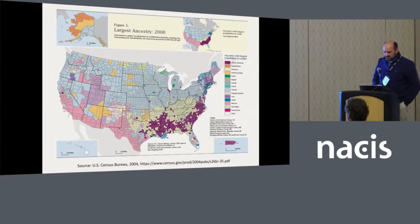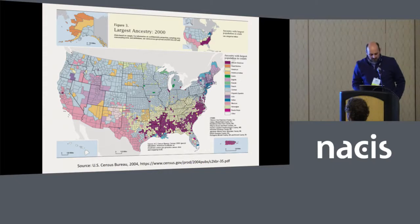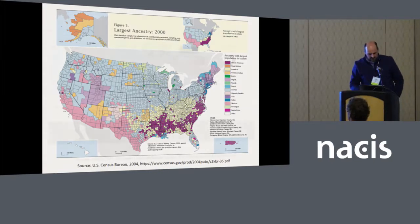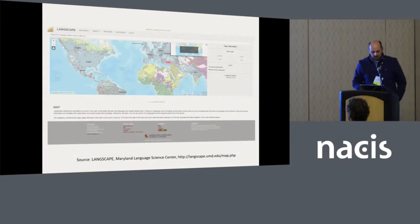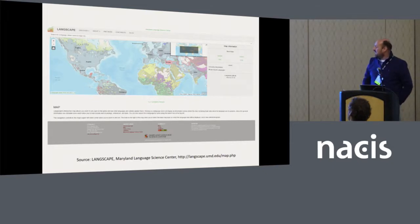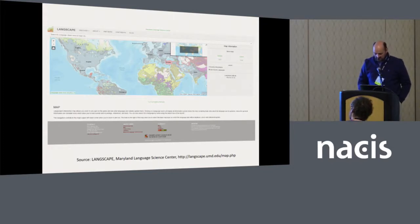To give a couple of examples of what I mean by cultural maps: this is a Census Bureau map of largest ancestry groups. You'll see a variety of groups — American Indians, Dutch in the green, African Americans in a purplish color, Germans in blue, and so forth. Another example: these are increasingly becoming more interactive in web mapping environments. This is the Landscape Project at the University of Maryland, which leverages a database of over 6,000 different languages. You can go in, view the maps interactively, click on different polygons, and explore them.